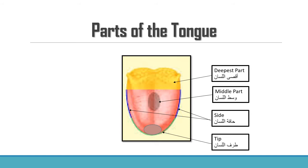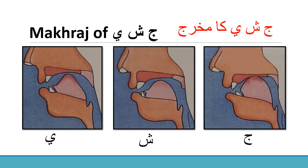Let's look into the مخرج of جيم, شين, and يا. When the middle part of the tongue touches or goes close to the middle part of the roof of the mouth, that is when جيم, شين, and يا are pronounced.